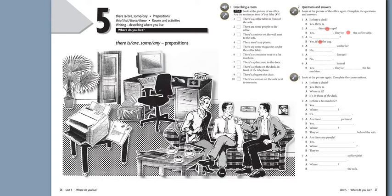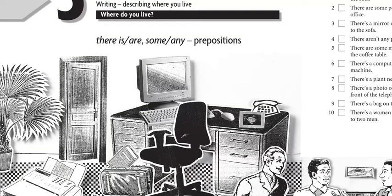In page number 26, as you can see, this is the start of Unit 5. The most important grammar rule we need to practice from here is there is, there are, and then some versus any and prepositions.